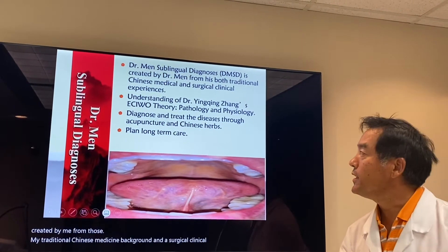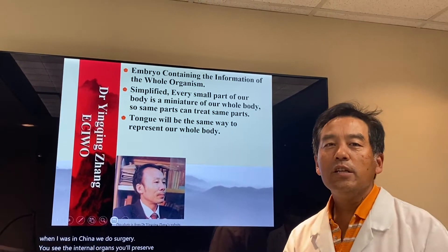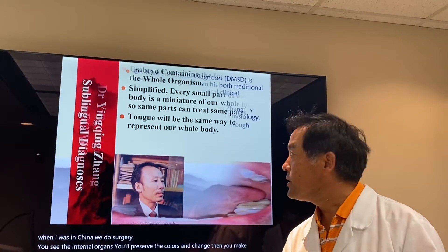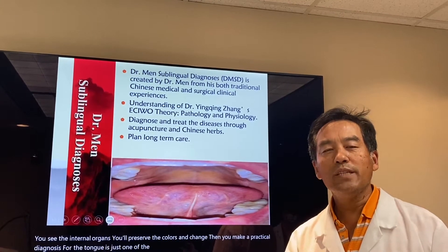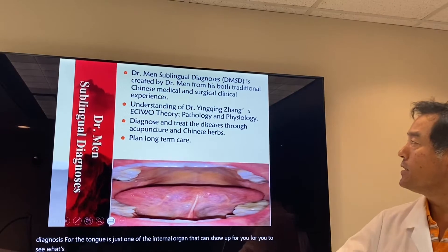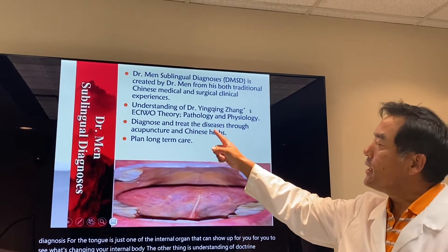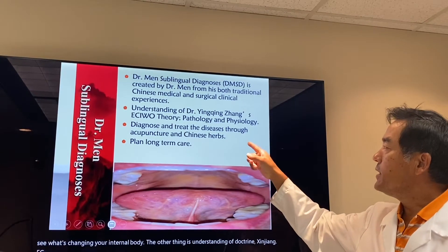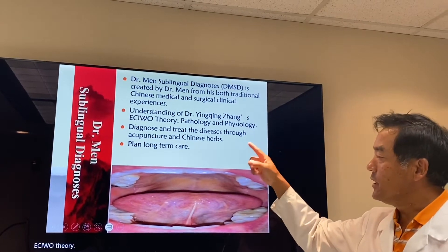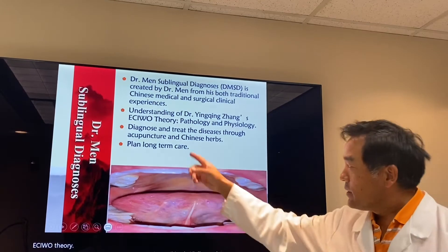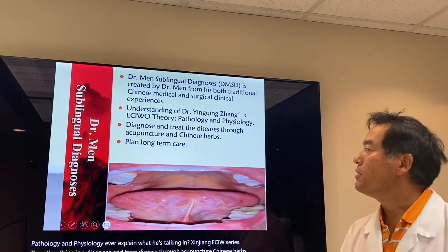I was a surgeon when I was in China. When you do surgery, you see the internal organs — you observe the colors and changes, then you make a particular diagnosis. For the tongue, it's just one of the internal organs that can show up for you to see what's changing in your internal body. The other thing is understanding of Dr. Ying Qing Zhang's ECI-WO theory, pathology and physiology.